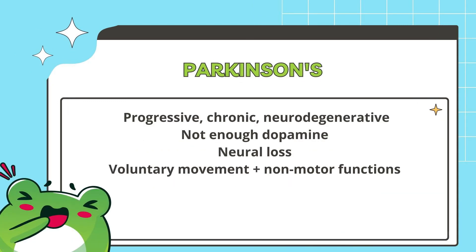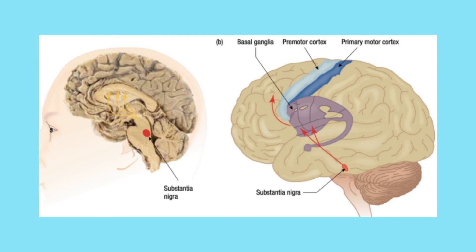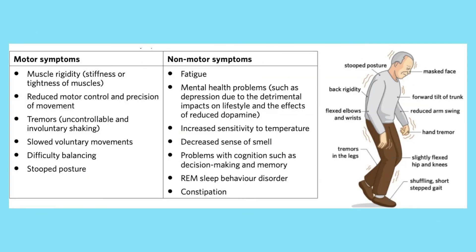An example of interference in neurotransmission is Parkinson's disease. It is caused by interference to dopamine production, resulting in a deficiency of dopamine. Dopamine is a neurotransmitter which coordinates voluntary movement and reward-based learning. Parkinson's affects both motor and non-motor functions and is characterised by neural damage and loss in the substantia nigra of the basal ganglia in the brain. Characteristic symptoms include loss of control of voluntary movement such as hand tremors and stooped posture, as well as non-motor symptoms like fatigue and constipation. That's all for today on nervous system functioning.